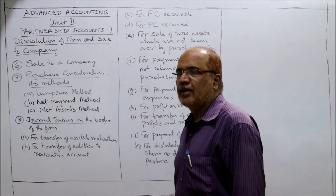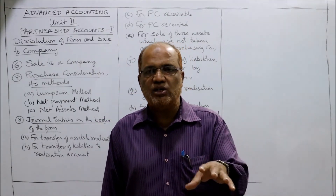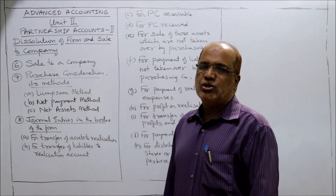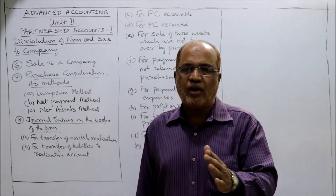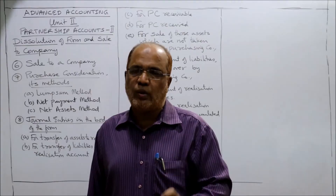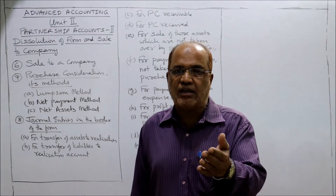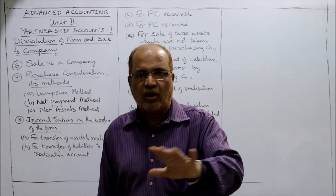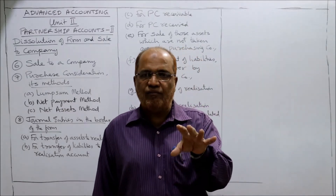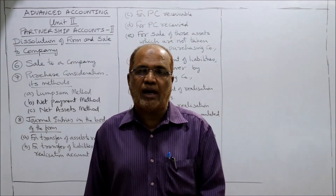Now the journal entries in the books of the firm — the same entries as in dissolution apply for sale to a company. The first entry is for transfer of assets to realization account: Realization Account debit to all individual assets at their book values. Cash and bank balance will not be transferred unless they are taken over by the purchasing company — if taken over, transfer them to realization.